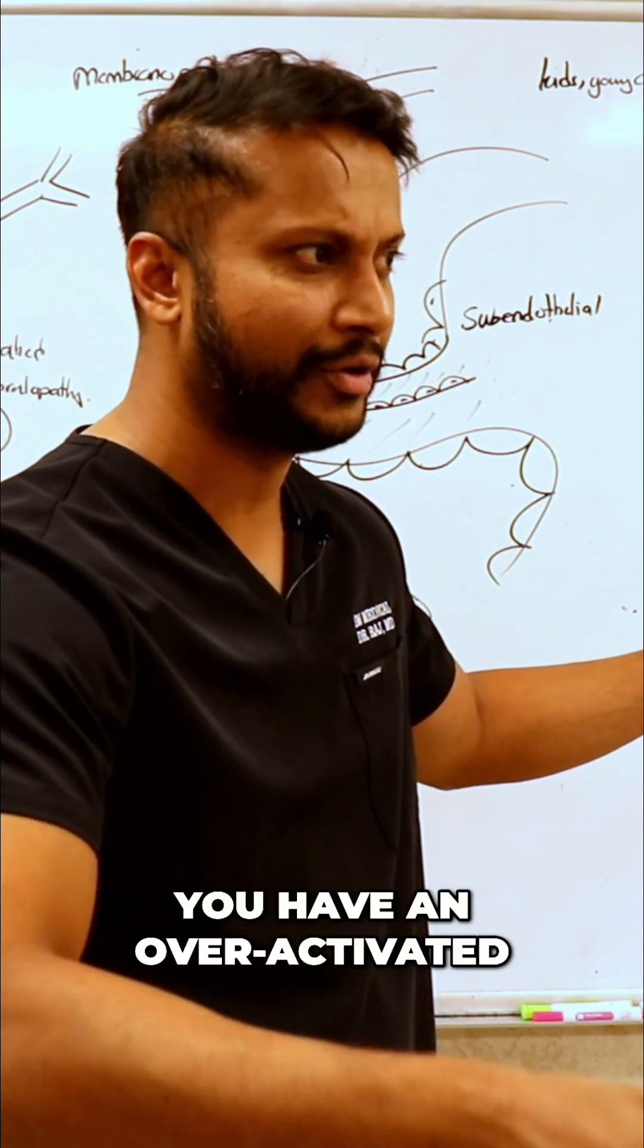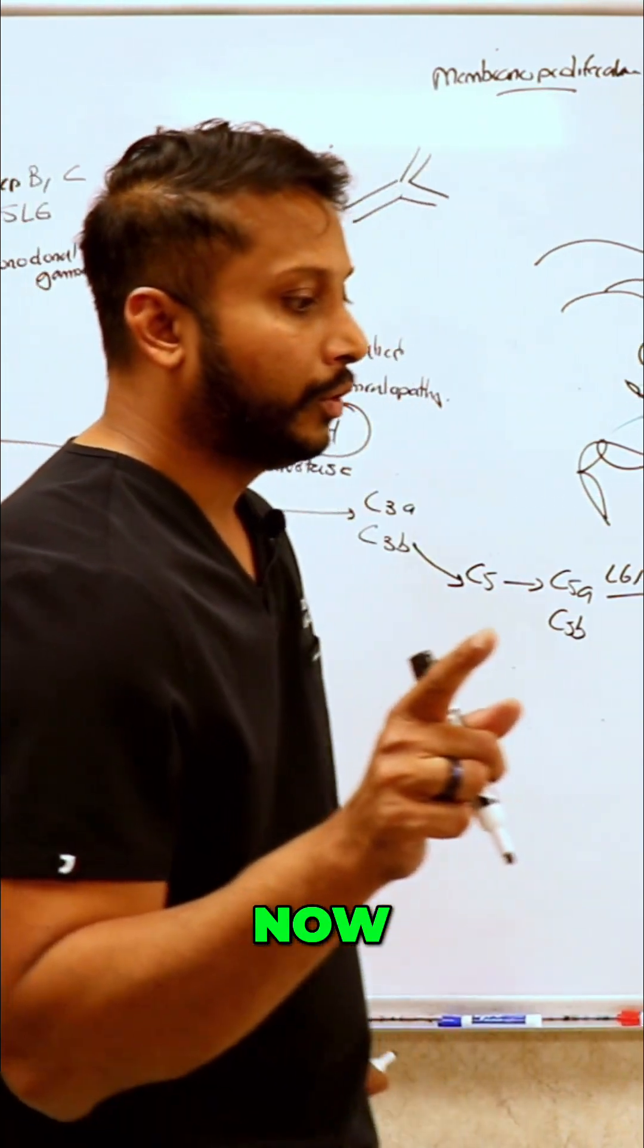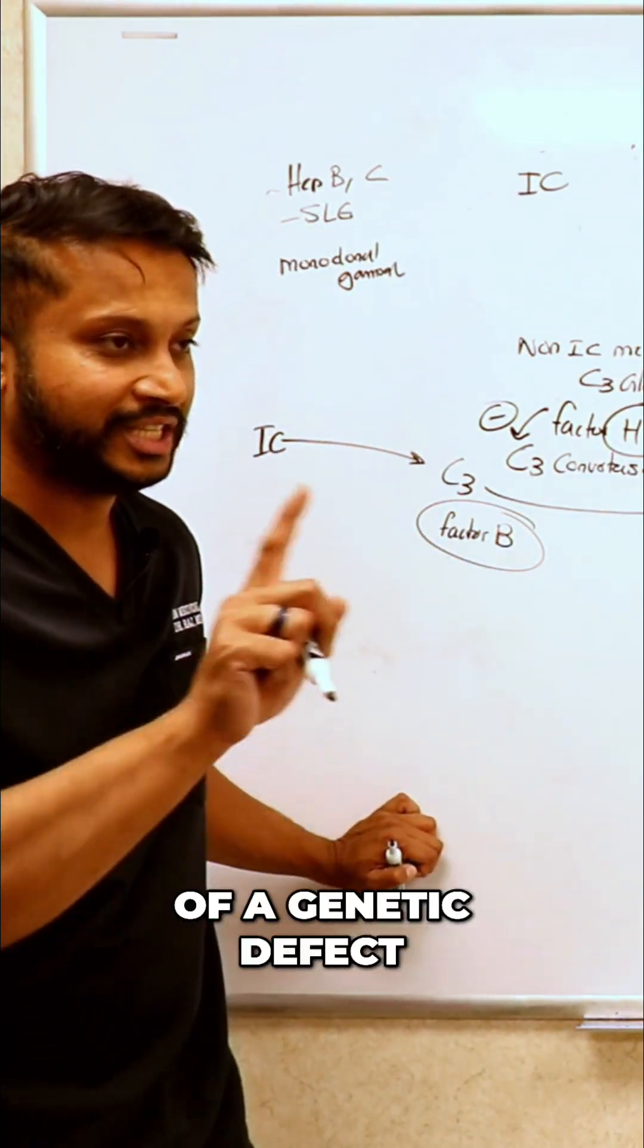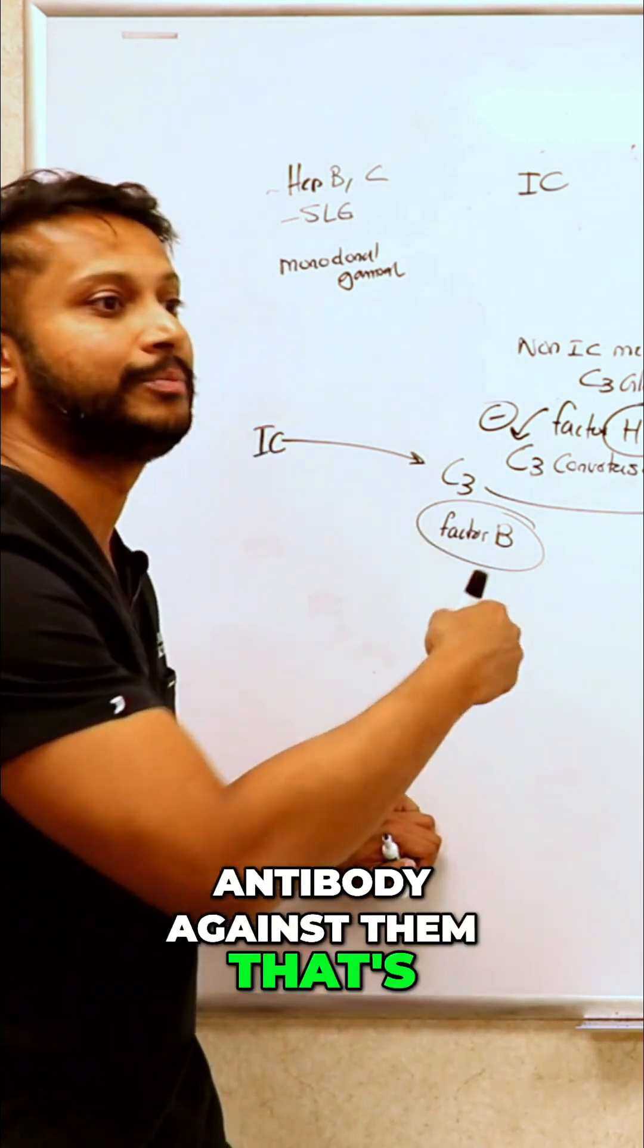Now you can have a problem with factor H and factor B because of a genetic defect, or you can have antibodies against them that's making it happen. Either way, in this scenario, you will activate complement cascade.